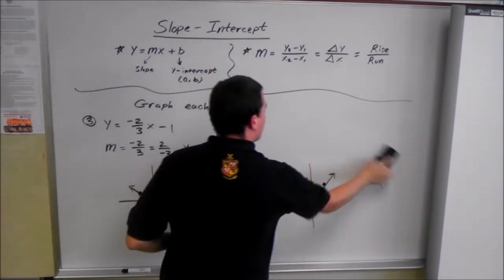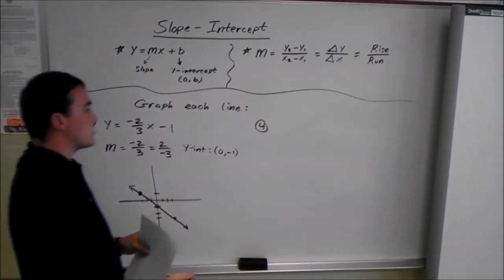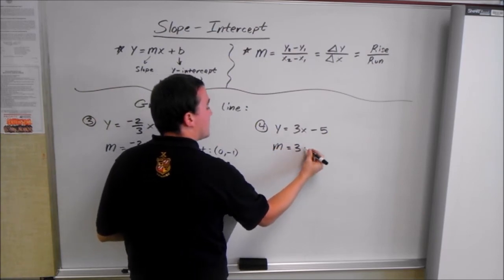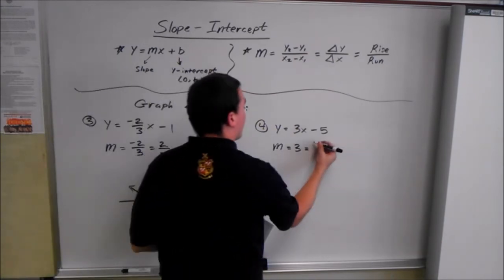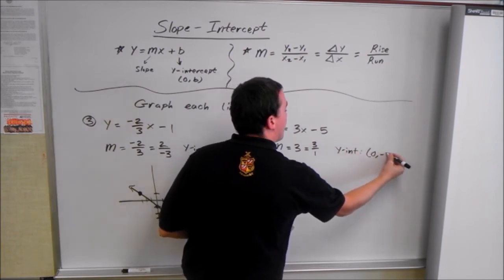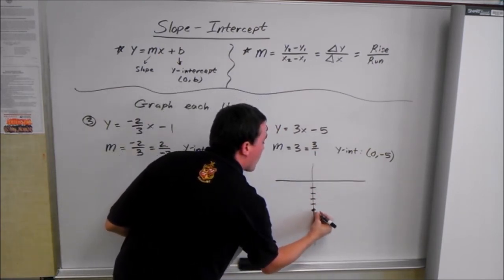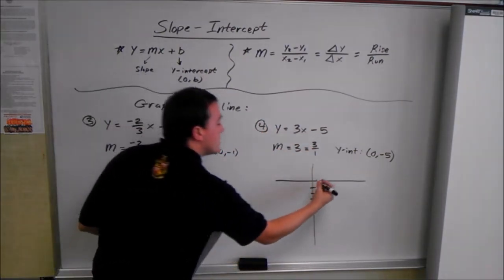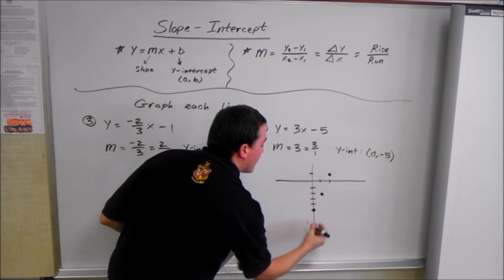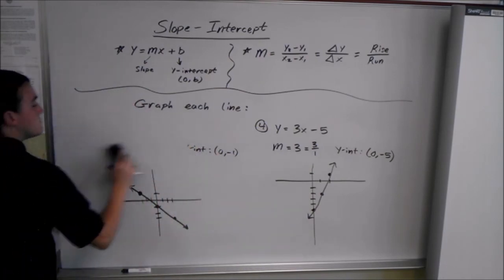Next: y equals 3x minus 5. Our slope is 3, and we like to see it as rise over run, so we say 3 over 1. Our y-intercept is 0, negative 5. We draw the graph, mark down 5 for the y-intercept, and go up 3 over 1 repeatedly to get multiple points. That's our line.